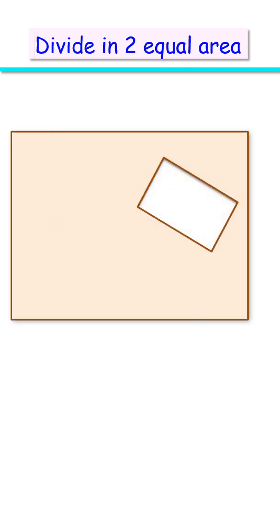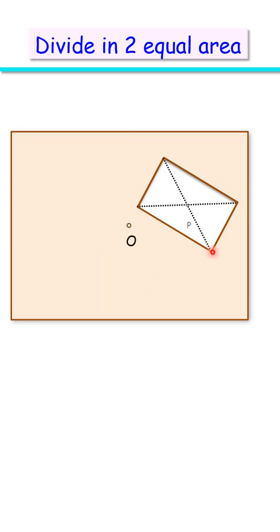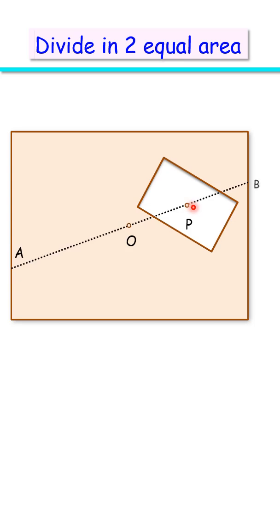In our original figure, let's first find the center of the big rectangle and the center of the cutout. Now let's draw a line passing through both centers O and P. This line AB passes through the center of the bigger rectangle, so it divides it into two equal areas.